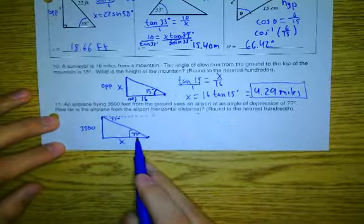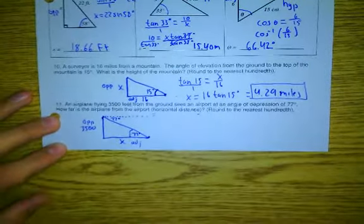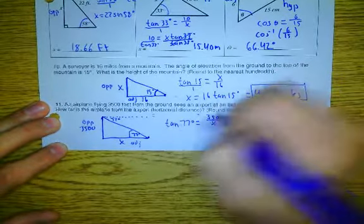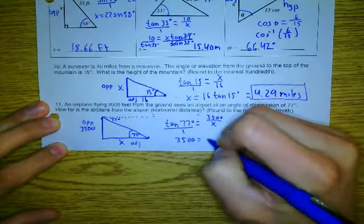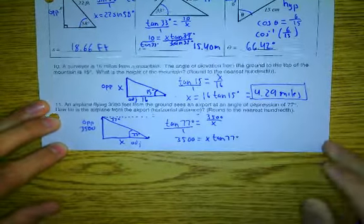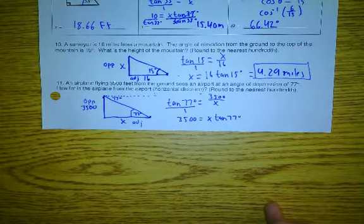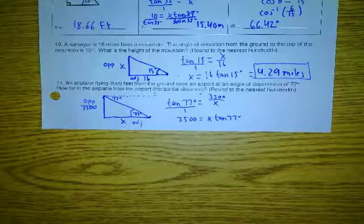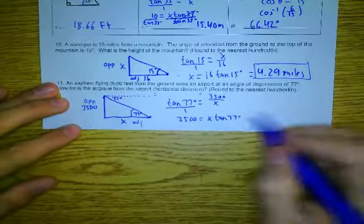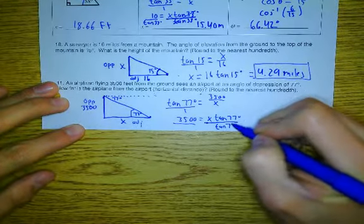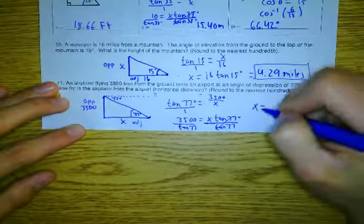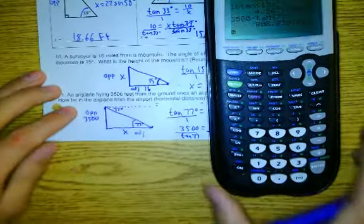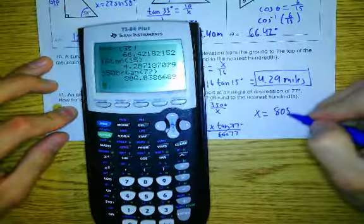So now you have a triangle. You have the opposite and you have the adjacent. This is tangent. Tangent of 77 degrees equals 3,500 over X. Put this over one. 3,500 equals X times tangent of 77 degrees. And one more time, some of you guys got here and got stuck. What do I do? I just showed you an example previously. How do I get X by itself? We're going to divide both sides by tangent of 77 degrees. Very good. That cancels out. So that means X equals, we're going to use your calculator, 3,500 divided by the tangent of 77 degrees. And it's approximately 808.04 feet.